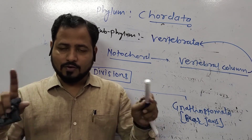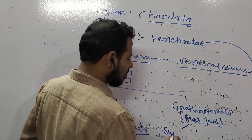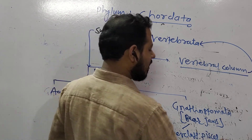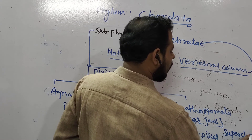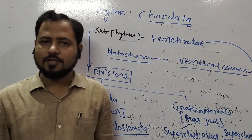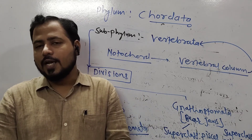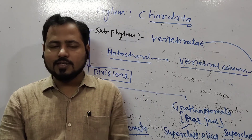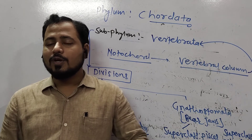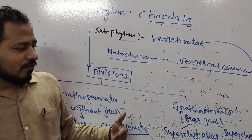Super class Pisces is distinguished into two different classes: Chondrichthyes (cartilaginous fishes) and Osteichthyes (bony fishes). Super class Tetrapoda includes four different classes: Amphibia, Reptilia, Aves, and Mammalia. So there are four classes under Tetrapoda that we will study.